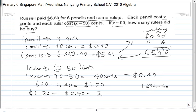$1.20 divided by $0.40 is the same as 120 divided by 40. 120 divided by 40, you cancel the zeros, is actually 12 divided by 4, which is actually 3. So how many rulers did he buy? He bought 3 rulers.